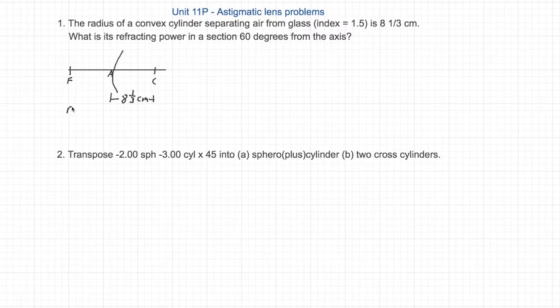The radius is a positive 8.33 centimeters going from left to right from A to C. Let's write that in meters, 0.0833 meters, because we're going to use that information to solve for the focal length.